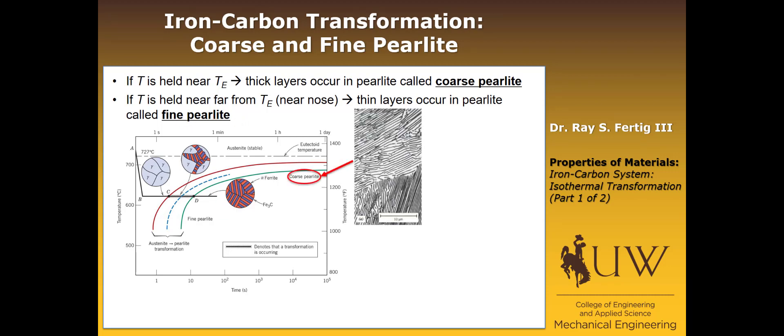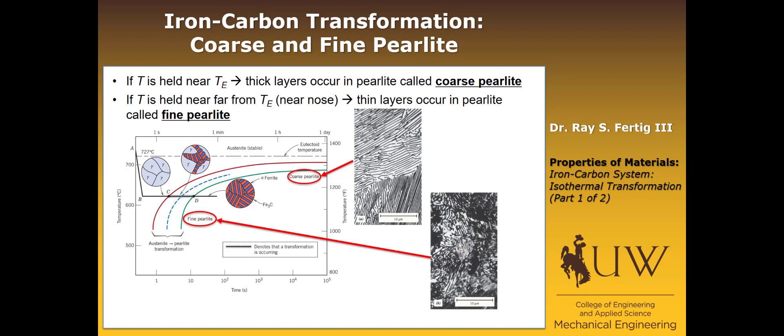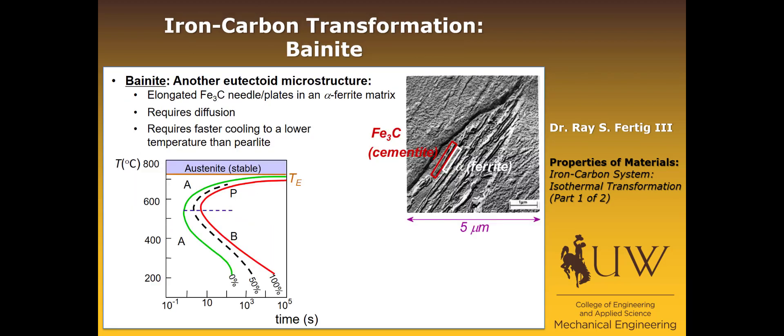Coarse pearlite simply has thicker layers, while fine pearlite has much closer together and thinner layers. If we hold the temperature far from the eutectoid temperature, near the nose, we have a high nucleation rate and slow growth rate, producing fine pearlite. Pearlite is the eutectoid microstructure from the iron-carbon system. Another microstructure is called bainite — also a eutectoid microstructure. In this case, we end up with cementite or Fe3C plates in basically an alpha ferrite matrix. The transformation requires diffusion, just like it did to form pearlite.